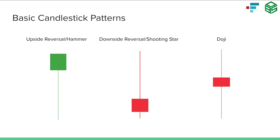Every time you see an upside reversal, it doesn't mean the stock is about to rip for the next week. Same with the downside reversal — it doesn't mean the world is ending and price is about to bust all the way open. And the doji candle doesn't mean the trend is totally going to change. These are just single candlestick patterns, and what they do is give us hints at what might be happening under the hood of the stock — but they're never guaranteed.